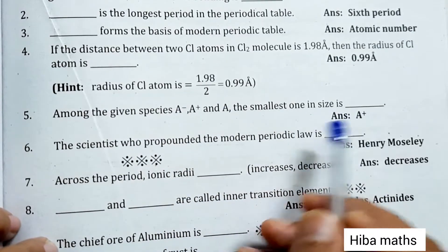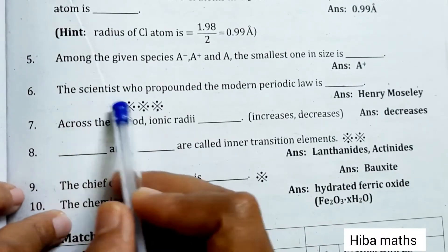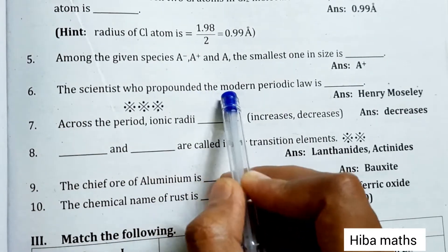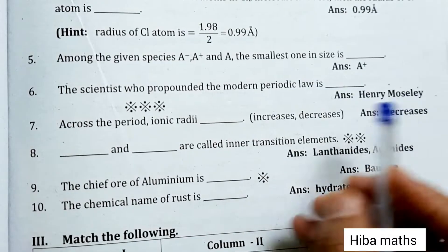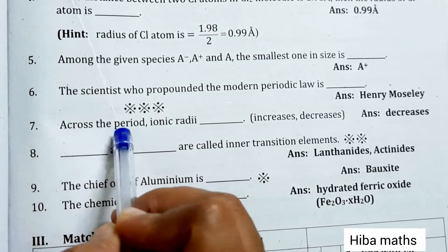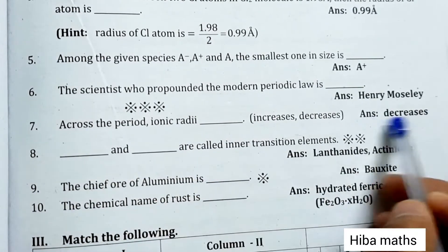The scientist who propounded the modern periodic law is Henry Moseley. Across the period, ionic radii decreases.